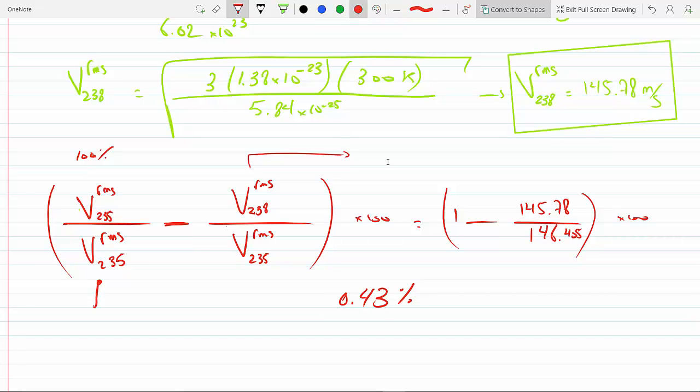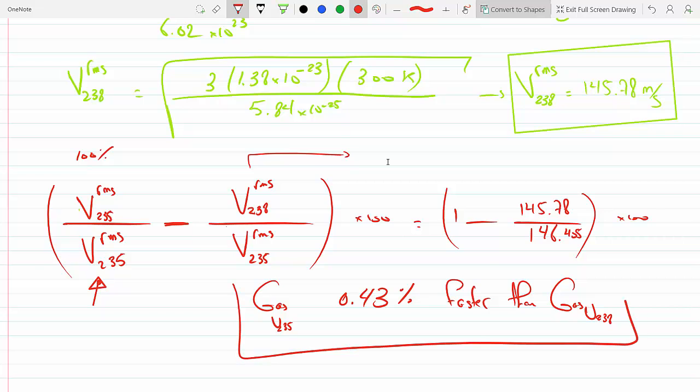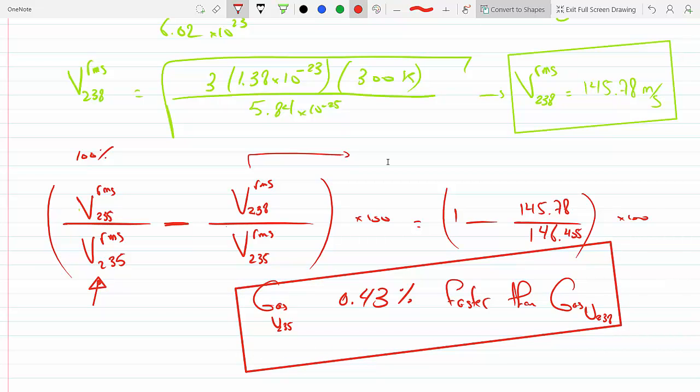That's what this is saying. The percent of the 235, which is this guy, is actually 0.43% plus the V 238 over V 235, which is the percent of the 238. So the gas with uranium 235 is 0.43% faster than the gas with uranium 238. That concludes this problem.